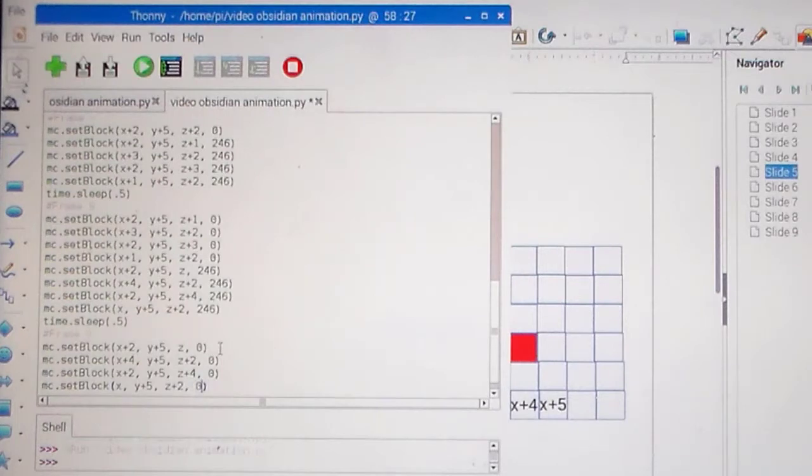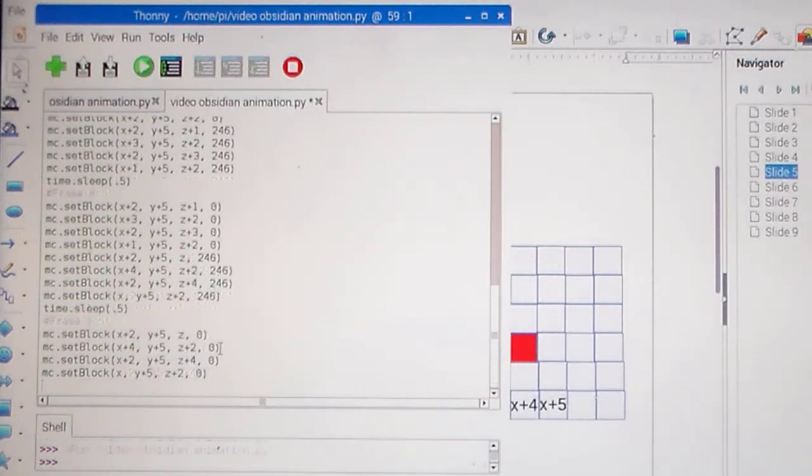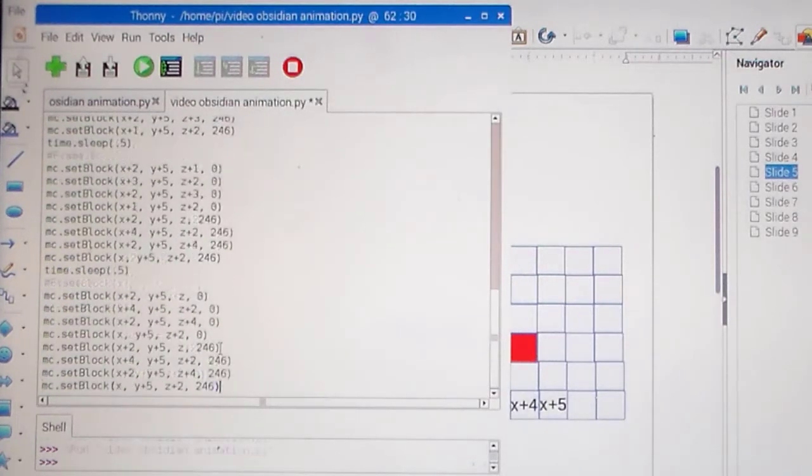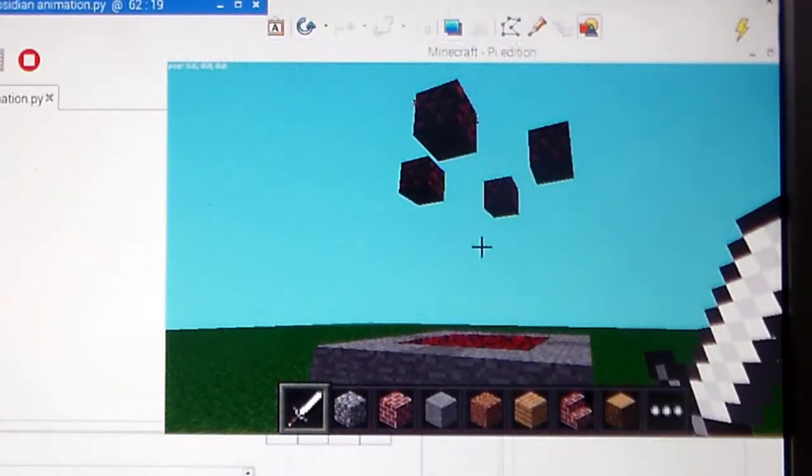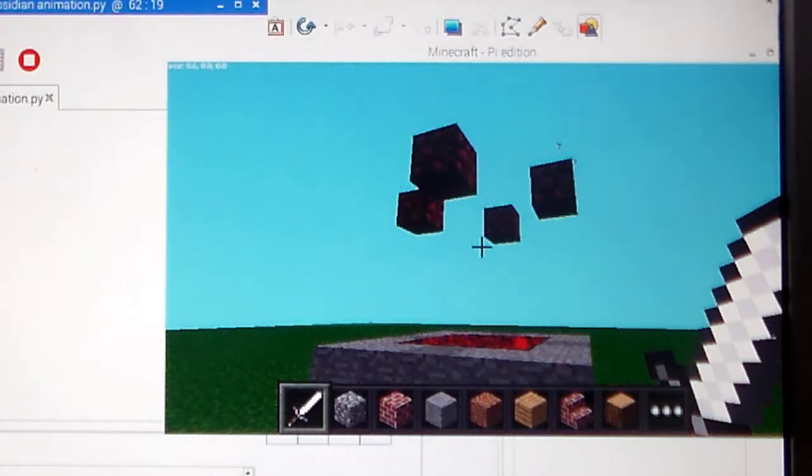There we go. Our next step is to copy or paste that same code, and now we're just going to turn our Y values from Y plus 5 to Y plus 4. It's as easy as that. That should be all we need to do to make this work. So now you look at this, I run it, it comes up, spreads out, and moves down. Perfect.